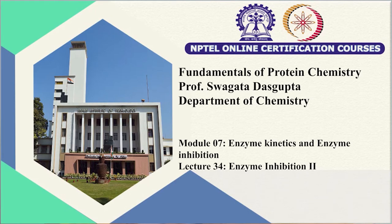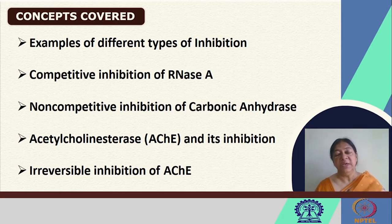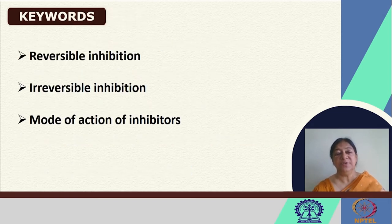In continuation of our discussion on enzyme inhibition, in the previous lecture we looked at specific inhibition types — competitive, non-competitive, and uncompetitive — in addition to irreversible types of inhibitions involving covalent connections with the enzyme. We are going to look at specific examples in this lecture in terms of reversible inhibition, irreversible inhibition, and the mode of action of these inhibitors.